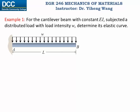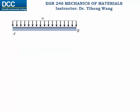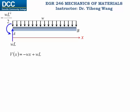Let's look at a simple example. For this cantilever beam with constant EI, subjected to a distributed load with constant load intensity w, we need to determine its elastic curve. Just as we've done before, we start with the free body diagram and determine the vertical support reaction at the fixed support to be wL, and the support moment to be negative wL squared over 2. We then set up the x-axis and use the method of sections to determine the shear force function and the internal bending moment as functions of x.